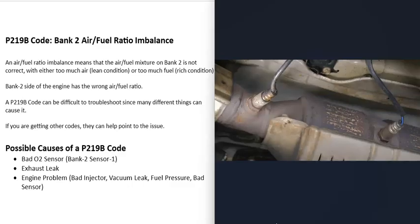Located on the exhaust are what's called oxygen sensors. These do two things: they monitor the catalytic converter, and they monitor how much oxygen was burnt off during combustion. They report this information back to the computer, which uses it to adjust the air-fuel ratio mixture going into the cylinders. When you get this P219B code, the bank 2 sensor 1 O2 sensor is reporting that the air-fuel ratio mixture is off.